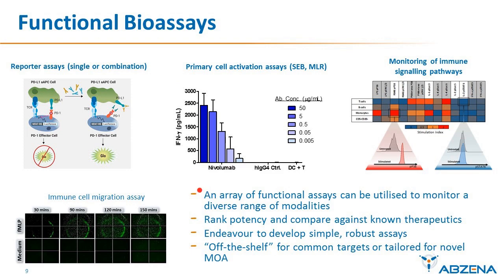We have an array of functional assays that can be utilized to monitor a diverse range of modalities. These can be used to rank potency between variants and compare against known or competing therapeutics. While bioassays can be complex, we endeavor to develop assays that are simple, robust, and very reliable to increase our confidence in the data, also with a view that some of these assays may be qualified for release testing on the potency front. Some assays are off the shelf — for common targeting mechanisms like checkpoint activity, we've already got predefined assays. But in many cases, especially for emerging therapeutics, bespoke or tailored assays are developed around novel and often multi-component modes of action.